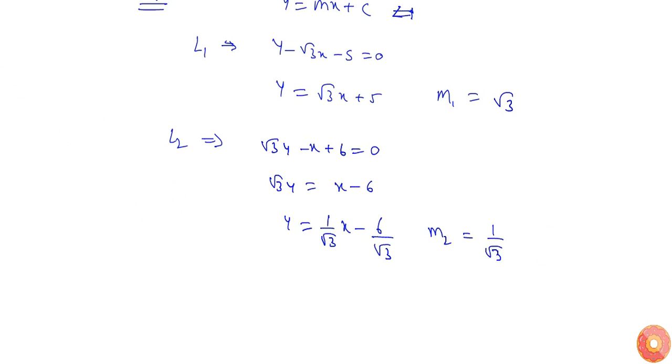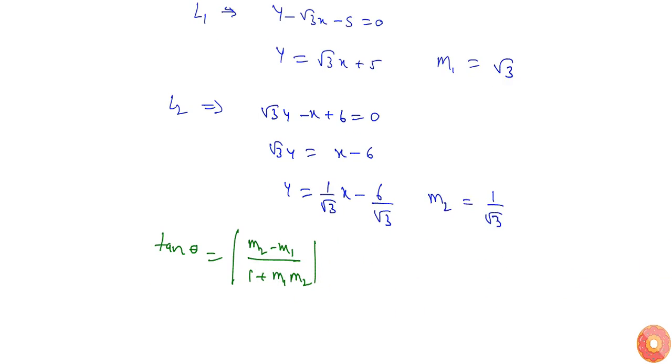The angle between two lines is given by tan theta equals m2 minus m1 by 1 plus m1 into m2. So we will get root 3 minus 1 by root 3 divided by 1 plus root 3 into